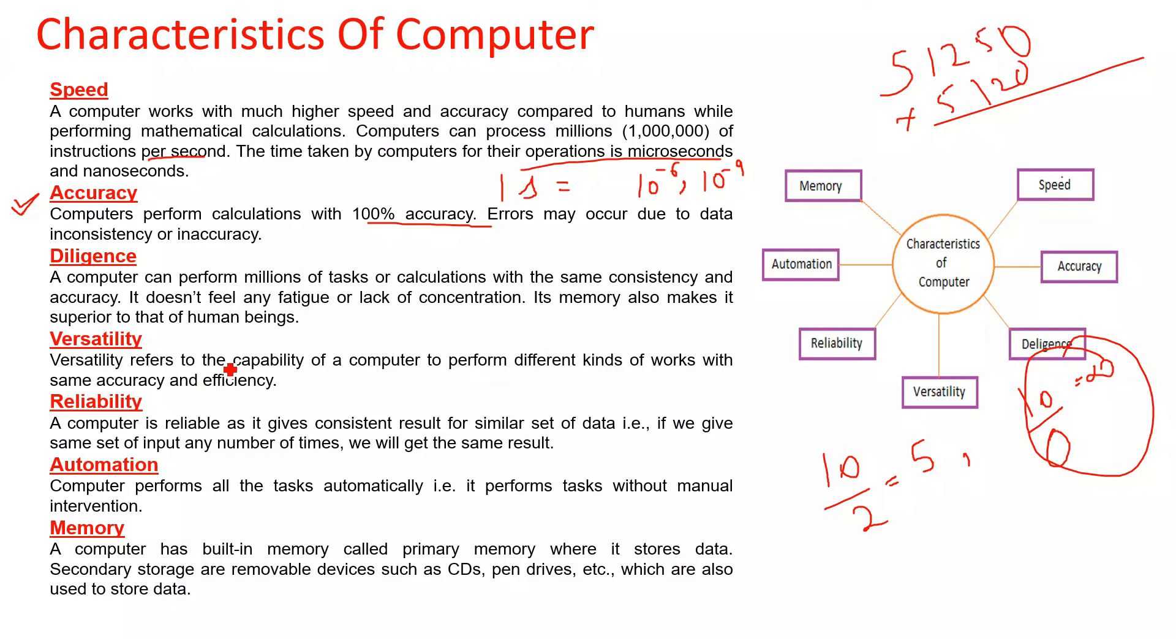Versatility refers to the capability of a computer to perform different kinds of work with the same accuracy and efficiency. For example, one time I play a game and at the same time I have music opened. Different tasks with the same accuracy and efficiency. When I play a game my music player will still work.